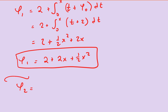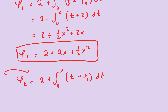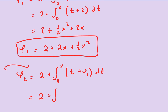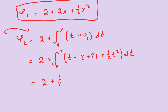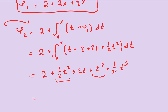φ₂ equals 2 plus the integral from 0 to x of t plus φ₁ dt. Substituting, that's 2 plus the integral from 0 to x of t plus 2 plus 2t plus one-half t squared dt. Integrating from 0 to x gives 2 plus 2t plus three-halves t squared plus 1 over 3 factorial t cubed, combining like terms.